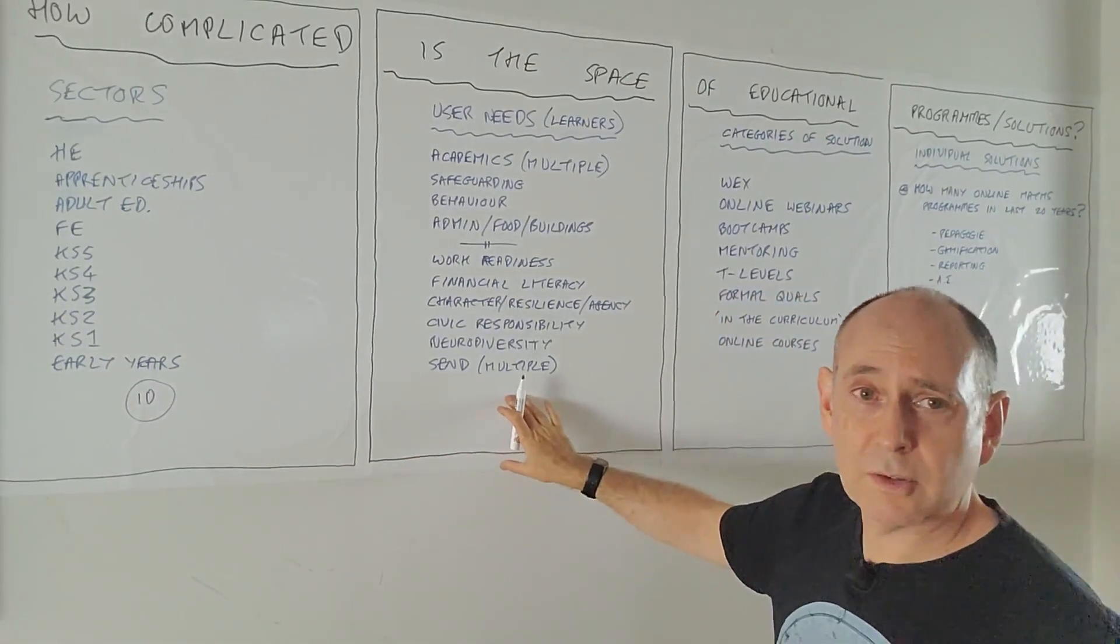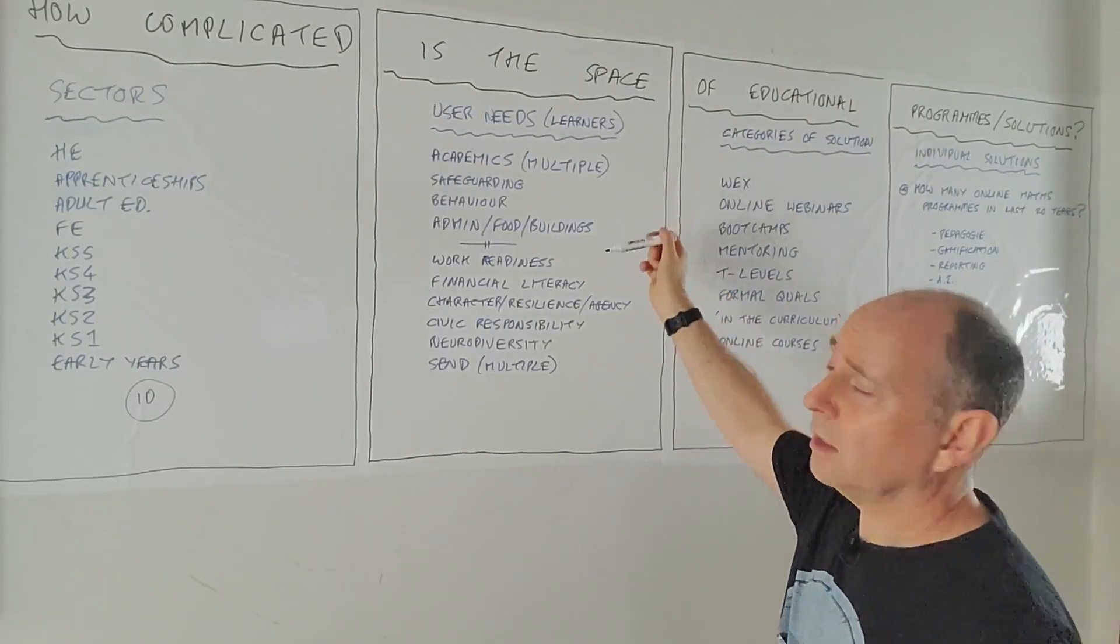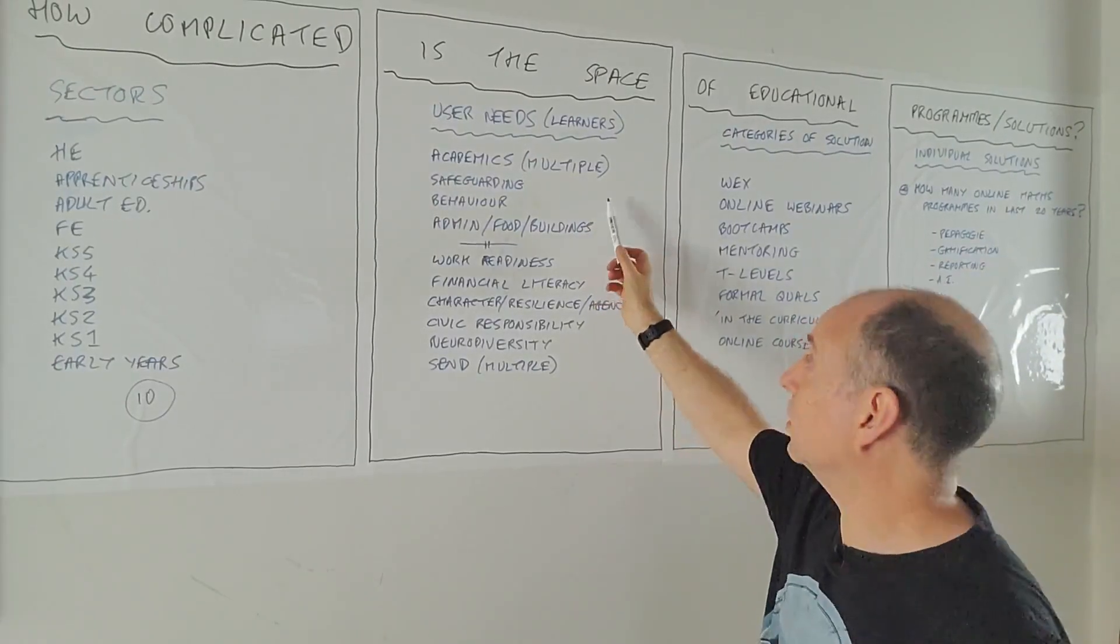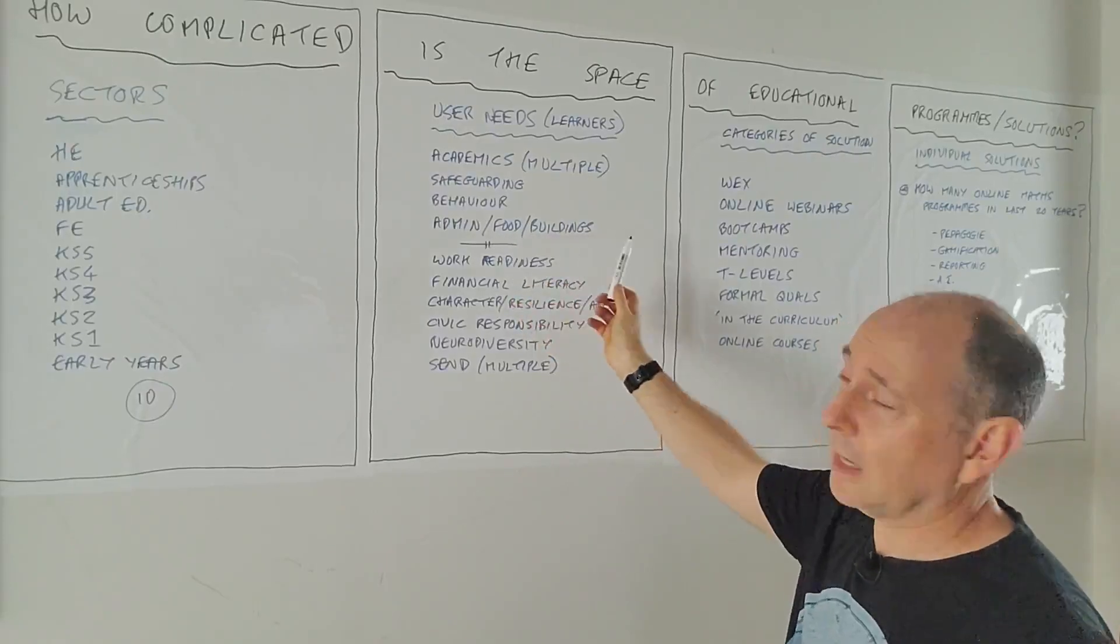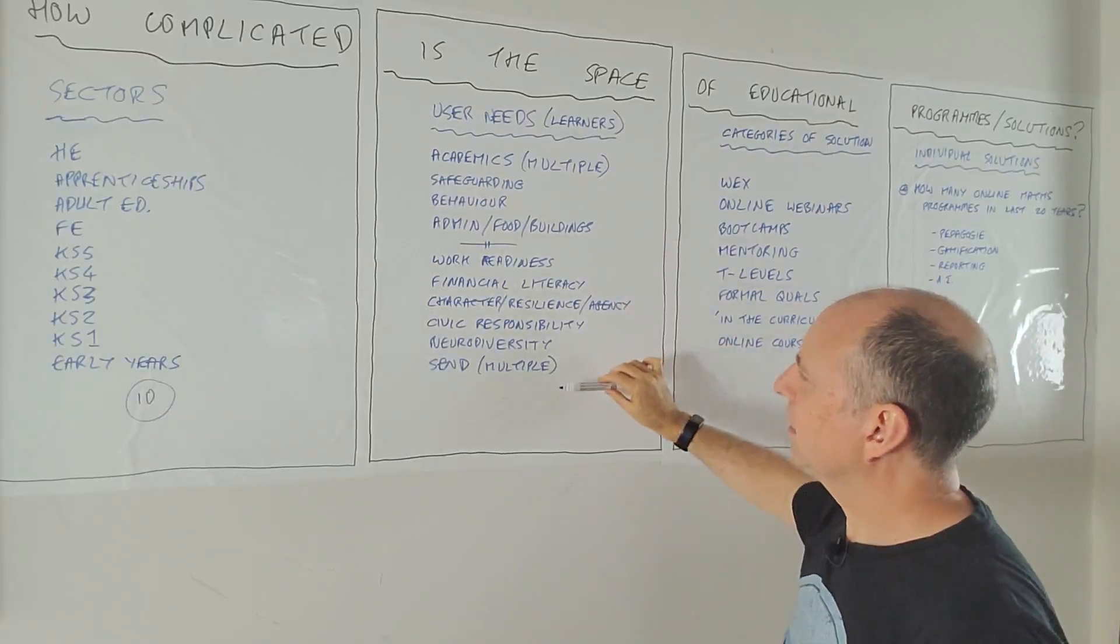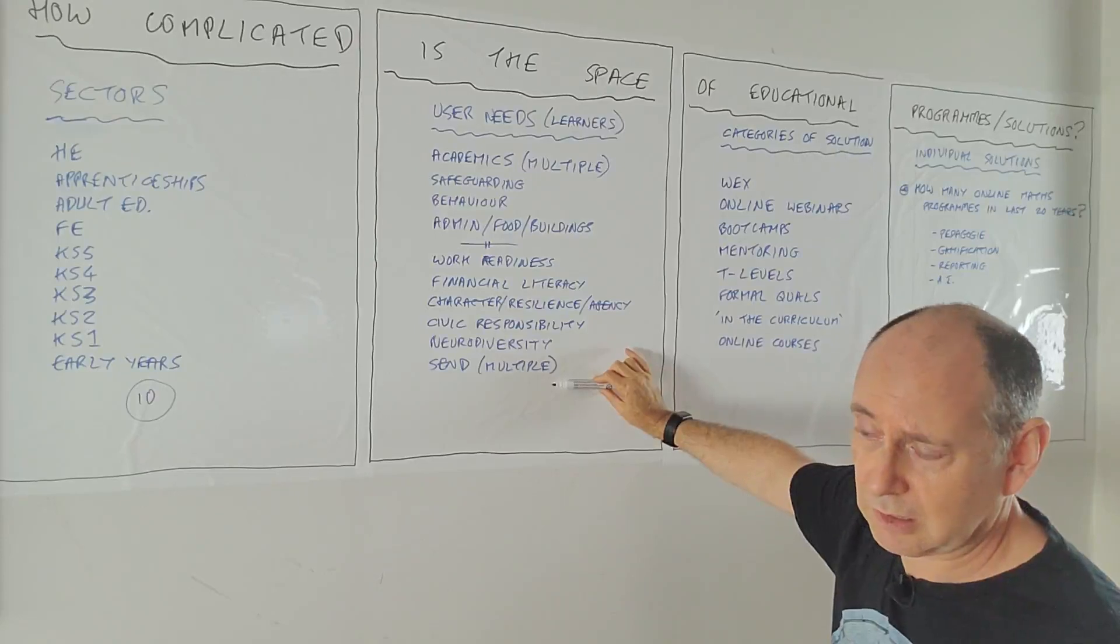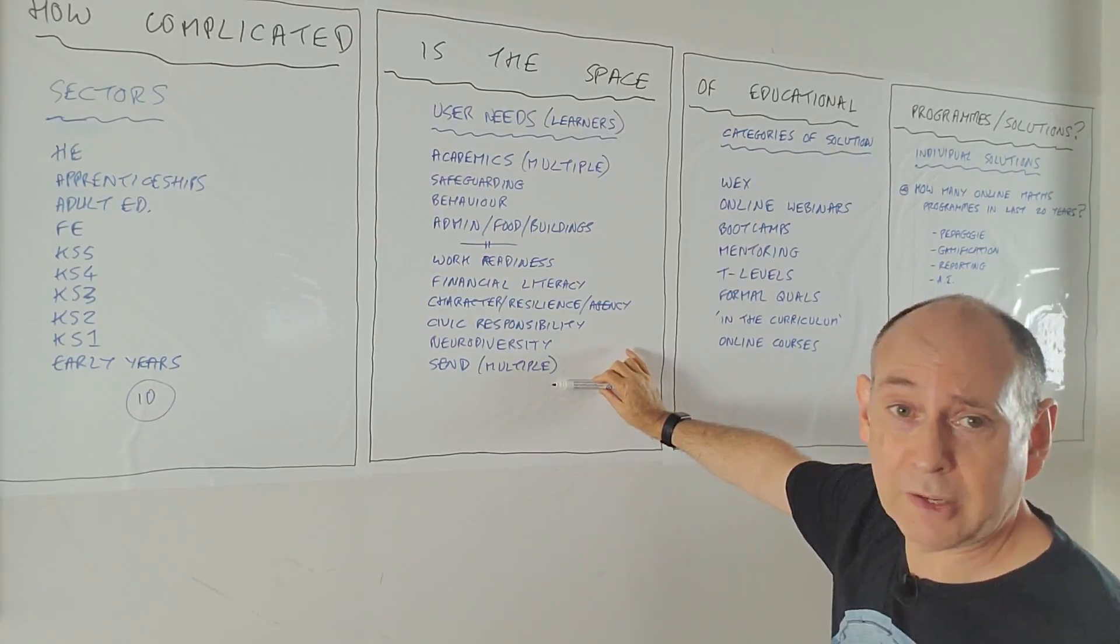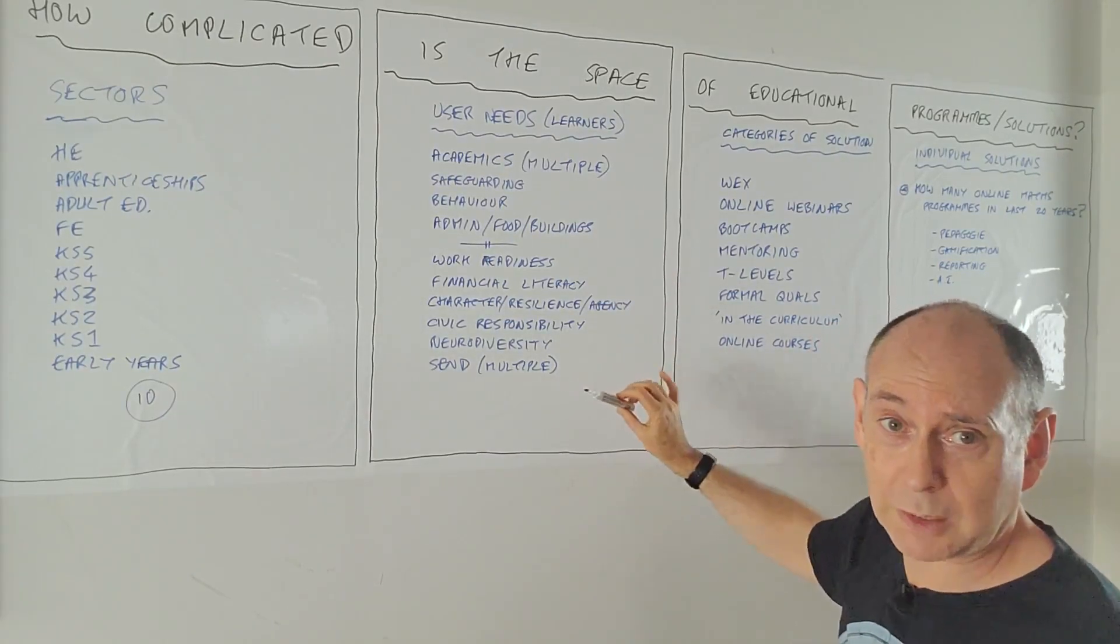Now, user needs, what a learner needs, if we want to go beyond the one size fits all. So we've got things that are reasonably well catered for now. Academics in multiple subjects, obviously, safeguarding behaviour, admin food buildings. And you've got some things that we'd probably like to do better. I think we did a consultation, limited consultation in Workstream 1, about areas where we felt the education system could do better. And these were some of the things that came up in that.